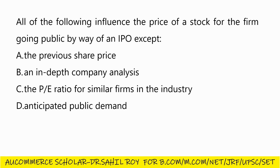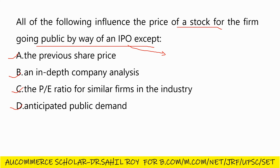Our next question: all of the following influence the price of a stock for a firm going public by way of an IPO — initial public offering. In the primary market, IPO takes place where the entire money goes to the company. After that, when customers trade among themselves, it happens in the secondary market and no money goes to the company. The answer is: the previous share price is the correct option.